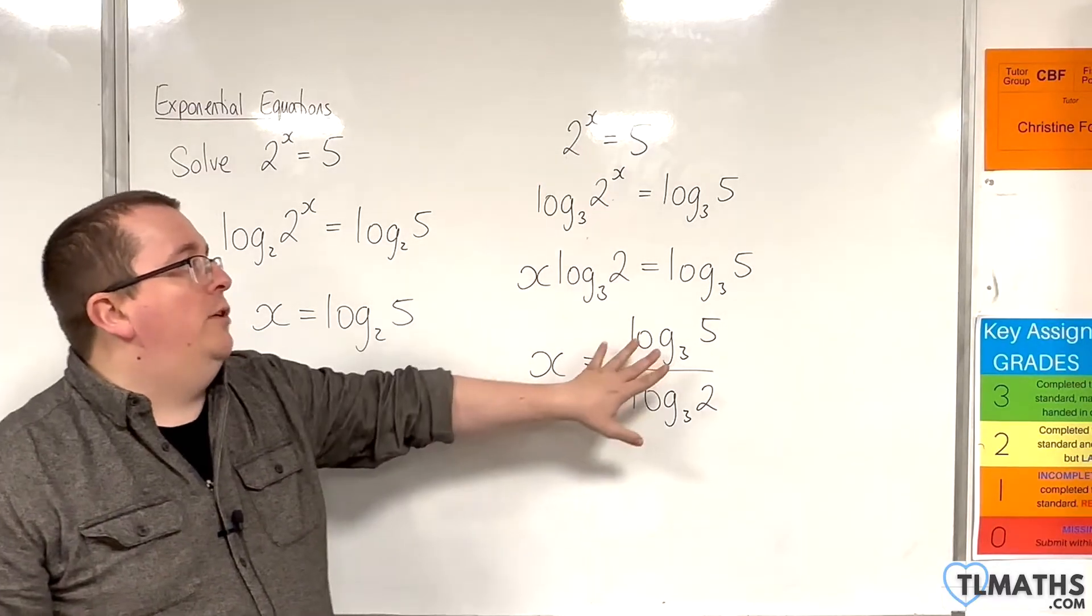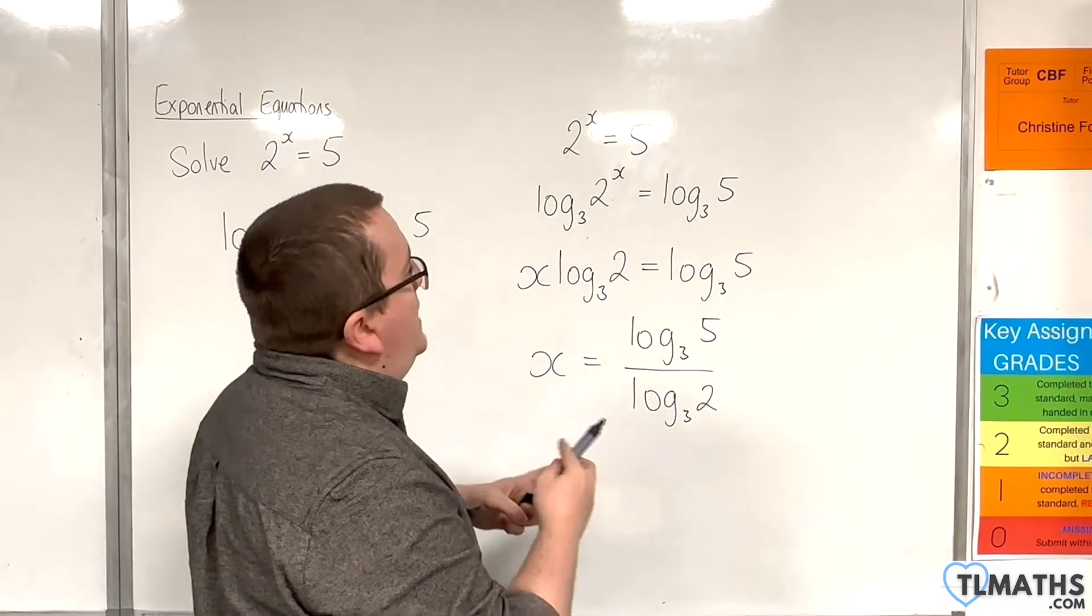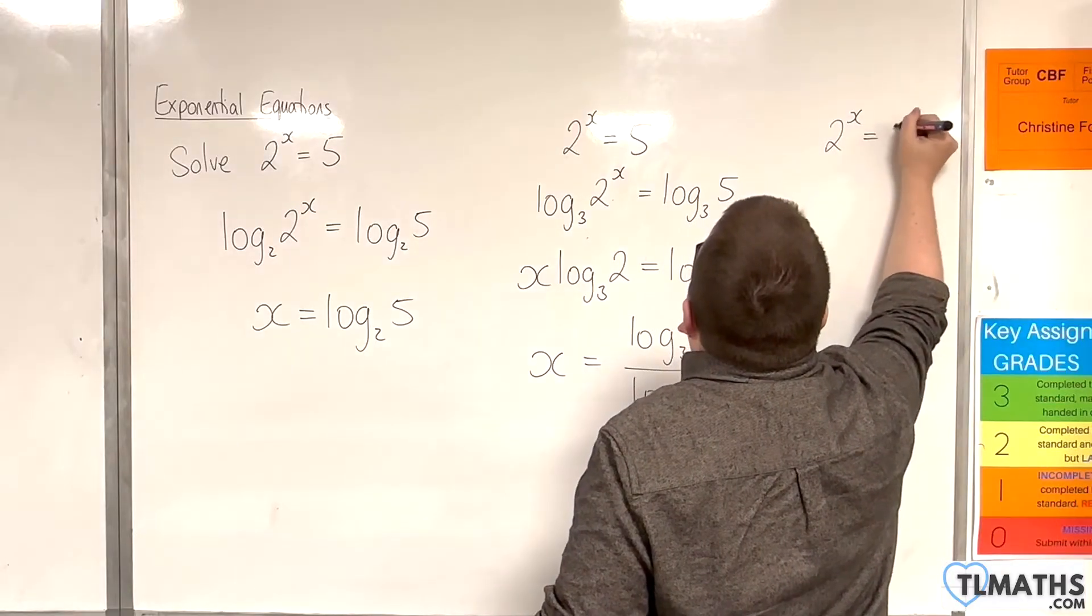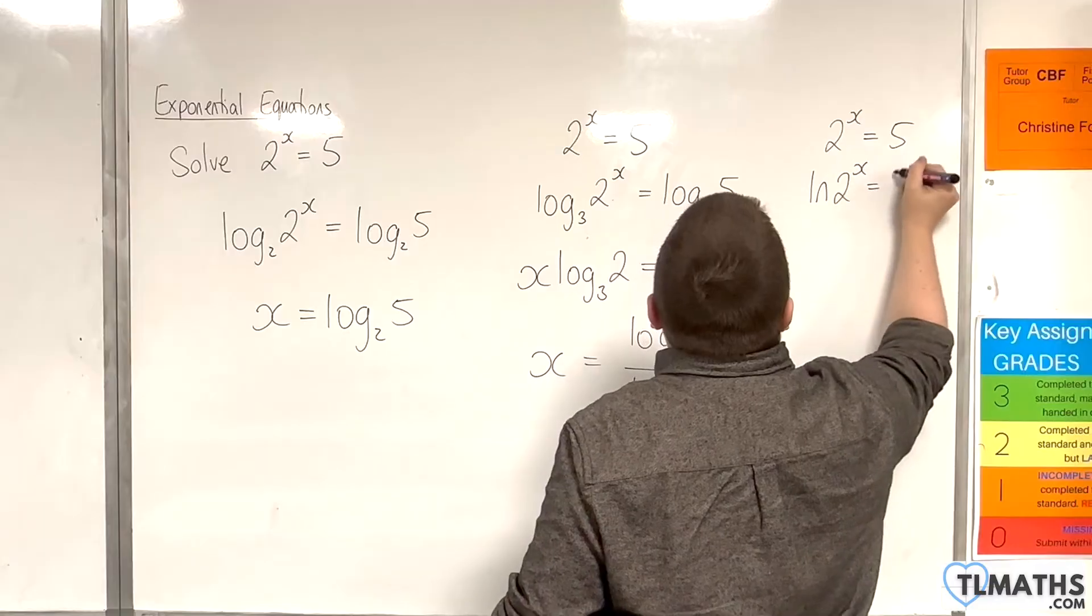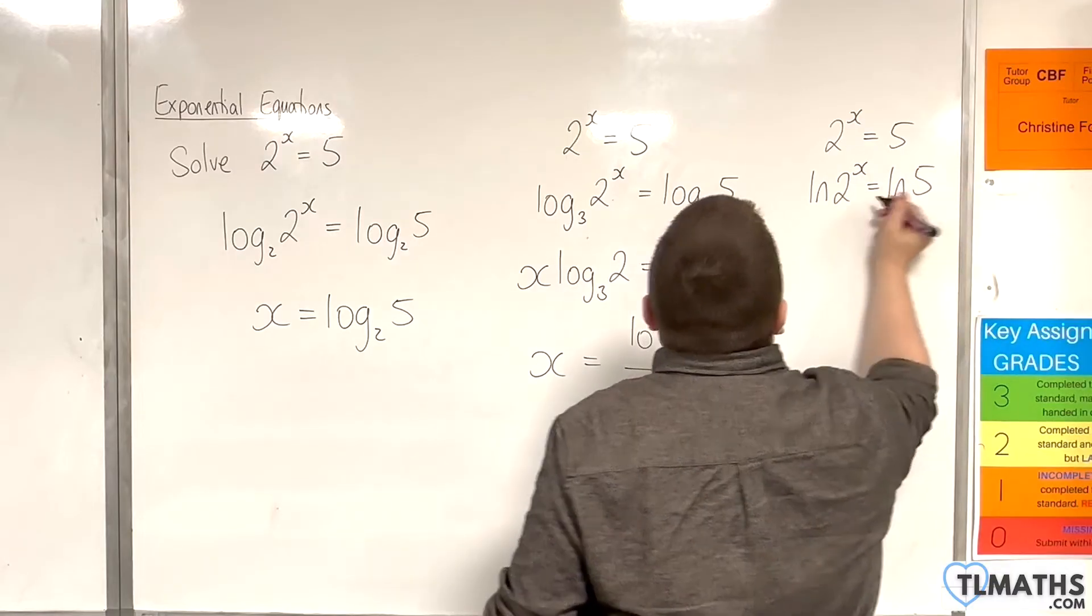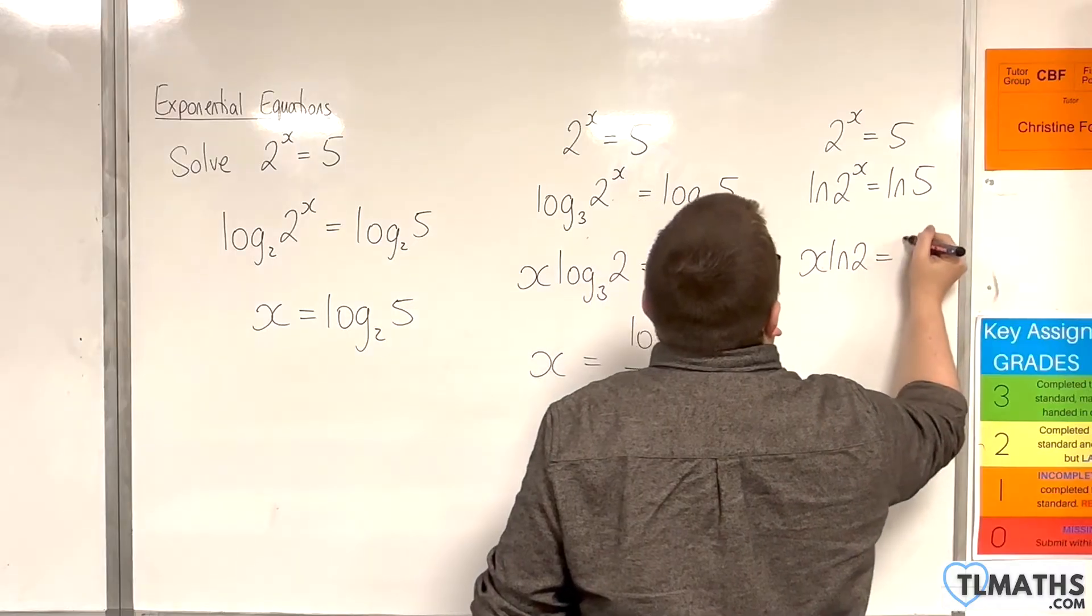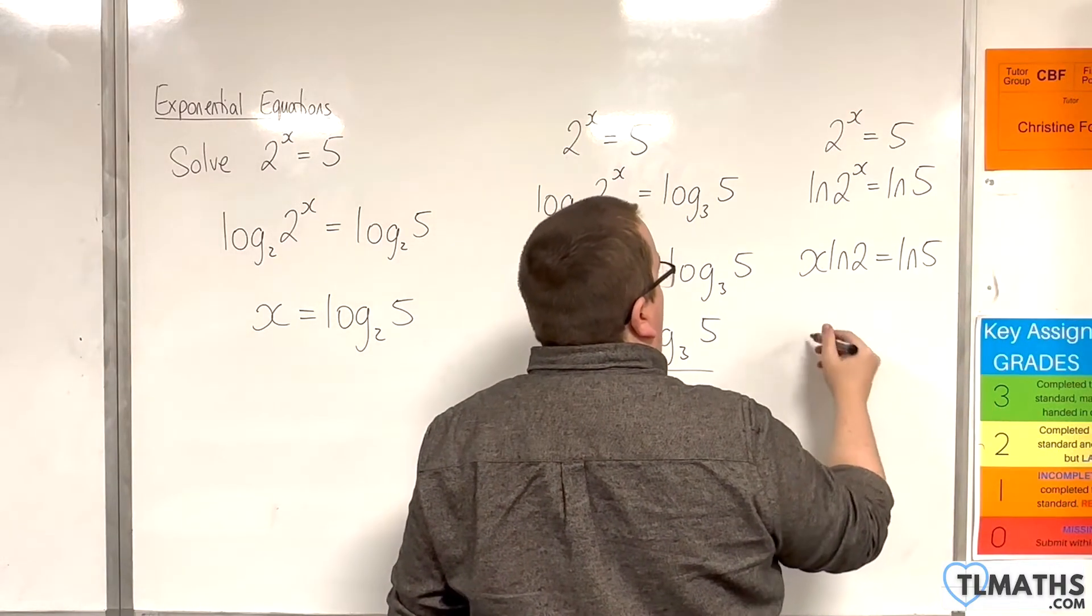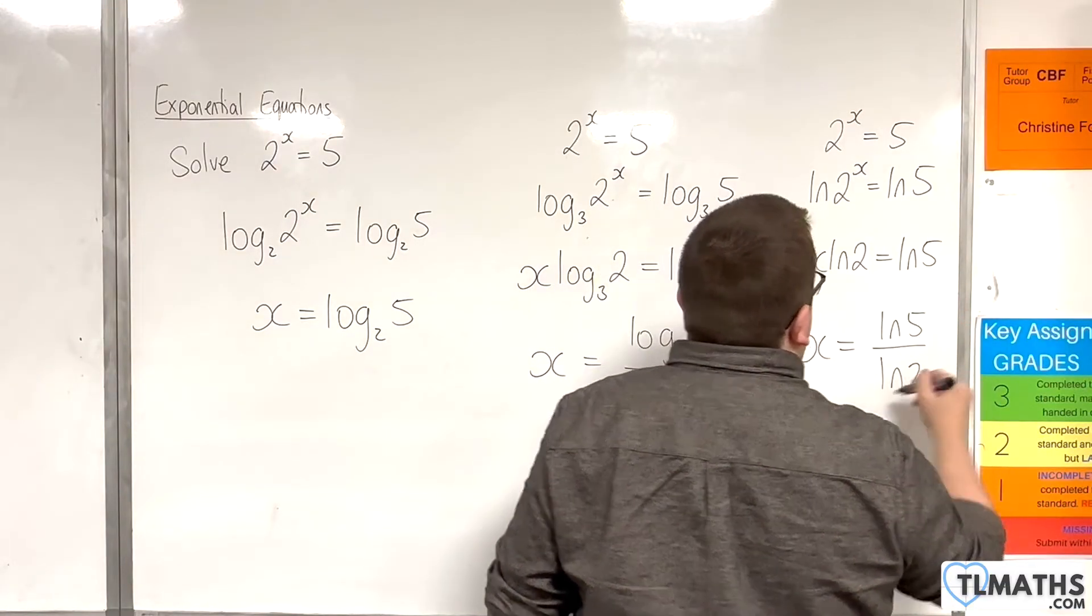Now, here I just chose base 3. I could have chosen the natural logarithm. So, I could do 2 to the x is equal to 5 and take the natural logarithm of both sides. Bring the x down to the front as I did previously. And then, divide both sides by the natural logarithm of 2. So, x is the natural logarithm of 5 divided by the natural logarithm of 2.